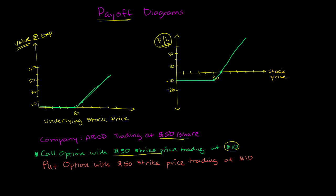We have company ABCD trading at $50 a share. Let's draw a payoff diagram for a put option with a $50 strike price trading at $10.